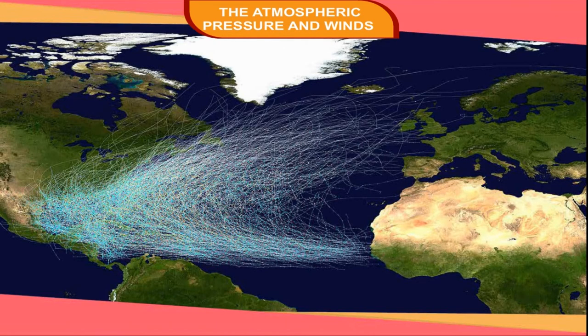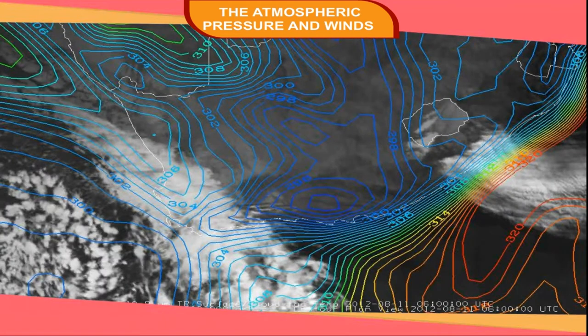The pattern of pressure distribution corresponds with the temperature belts on the surface of the earth. An area which is hot will always have rising air currents and thus will form a low pressure region. In a cold region, the air is cold and heavy and descends downwards, causing high pressure in that region.